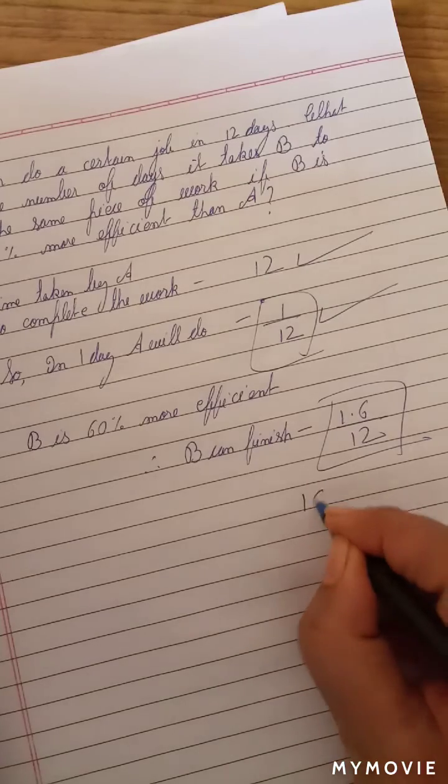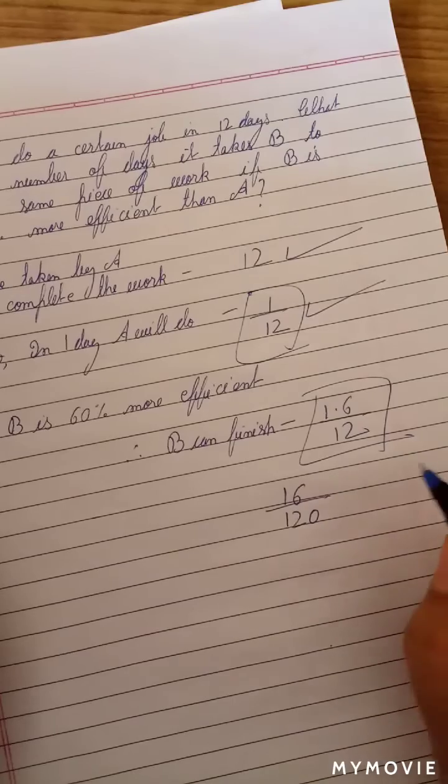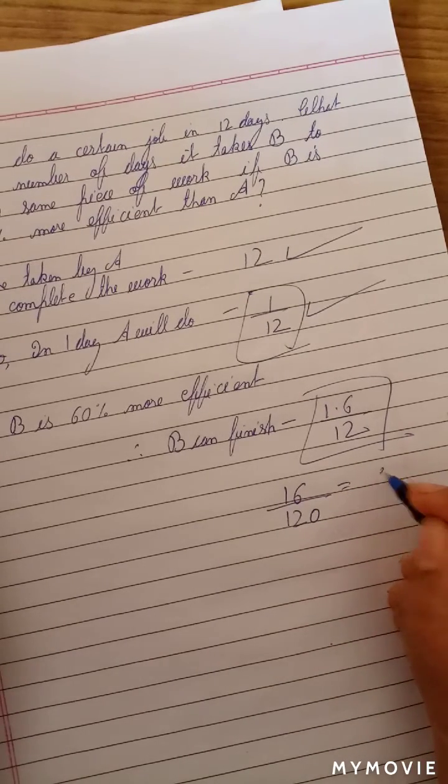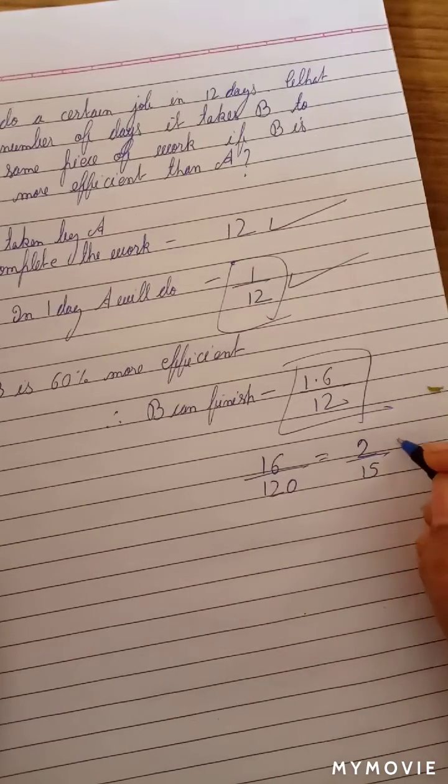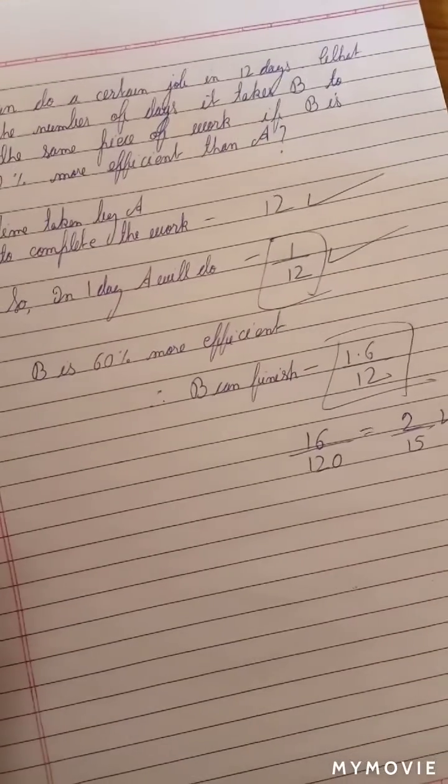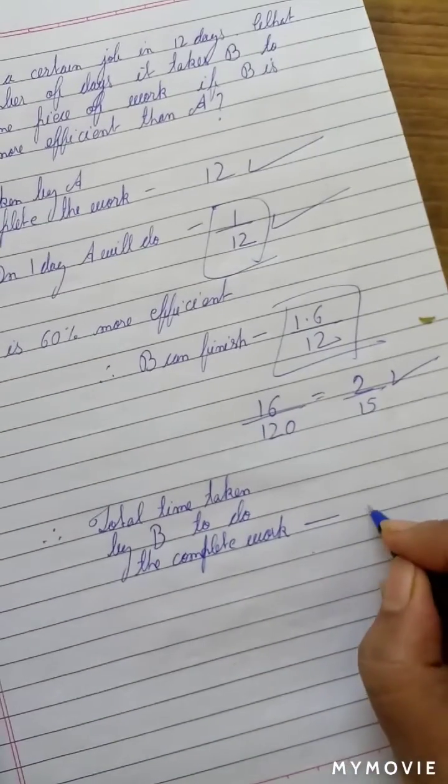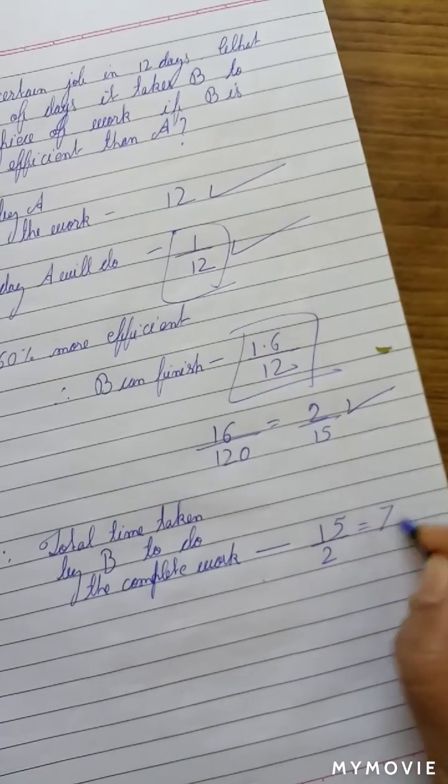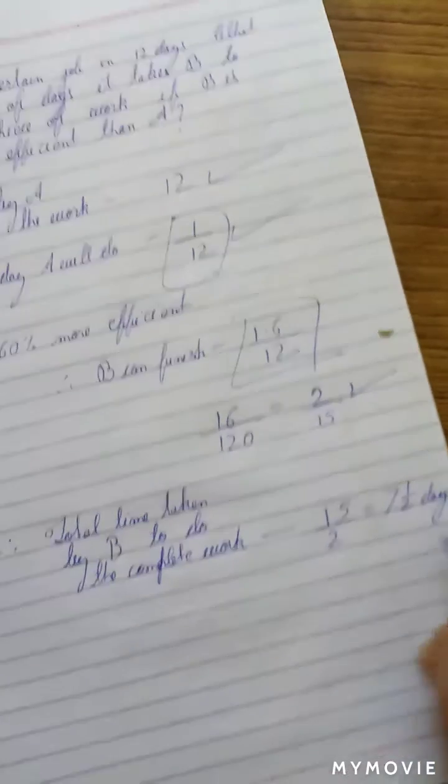Let's convert it into whole numbers. This much work will be done by B in one day. Therefore, total time taken to complete the work is going to be 15/2, or we can say 7.5 days. That was easy. Thank you.